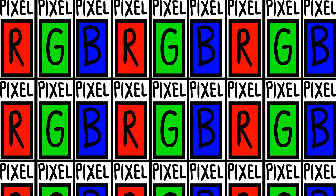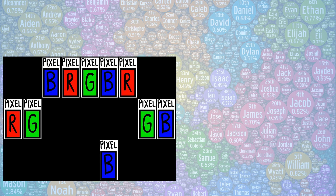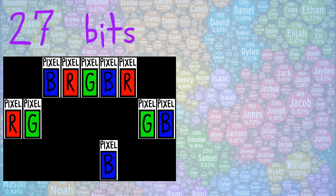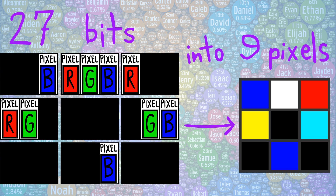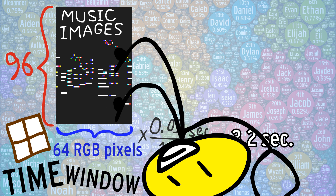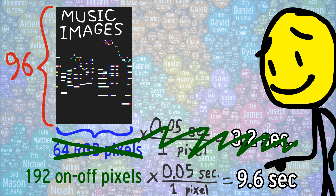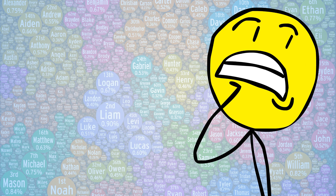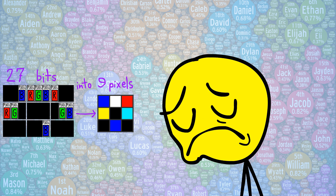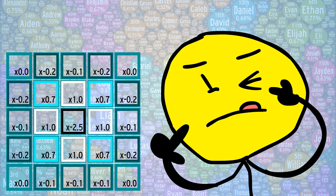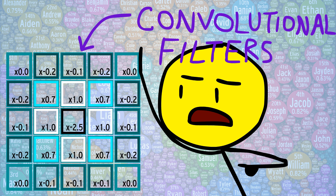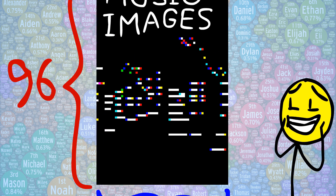Luckily, we can encode more information per pixel by taking apart the red, green, and blue channels of each pixel. Treat each channel as a separate pixel placed horizontally. Now each of these mini-pixels can be turned on or off independently of the others. In this example, watch as we encode 27 bits of information about our music into just 9 pixels. That simple tactic expands our time window to 192 pixels, or 9.6 seconds. Admittedly, this method is not very elegant, failing to use the intuitive spatial nature of convolutional filters. We get these dope-looking French flags as a result, so who could complain?